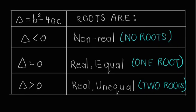If the value of the discriminant is less than zero, then the roots are non-real, meaning there are no roots and the graph does not intersect the x-axis. If the discriminant is equal to zero, then the roots are real and equal — there's only one root, and the turning point of the graph lies on the x-axis. But if the discriminant is greater than zero, then the roots are real and unequal — we have two different roots, and the graph cuts the x-axis at two different points.